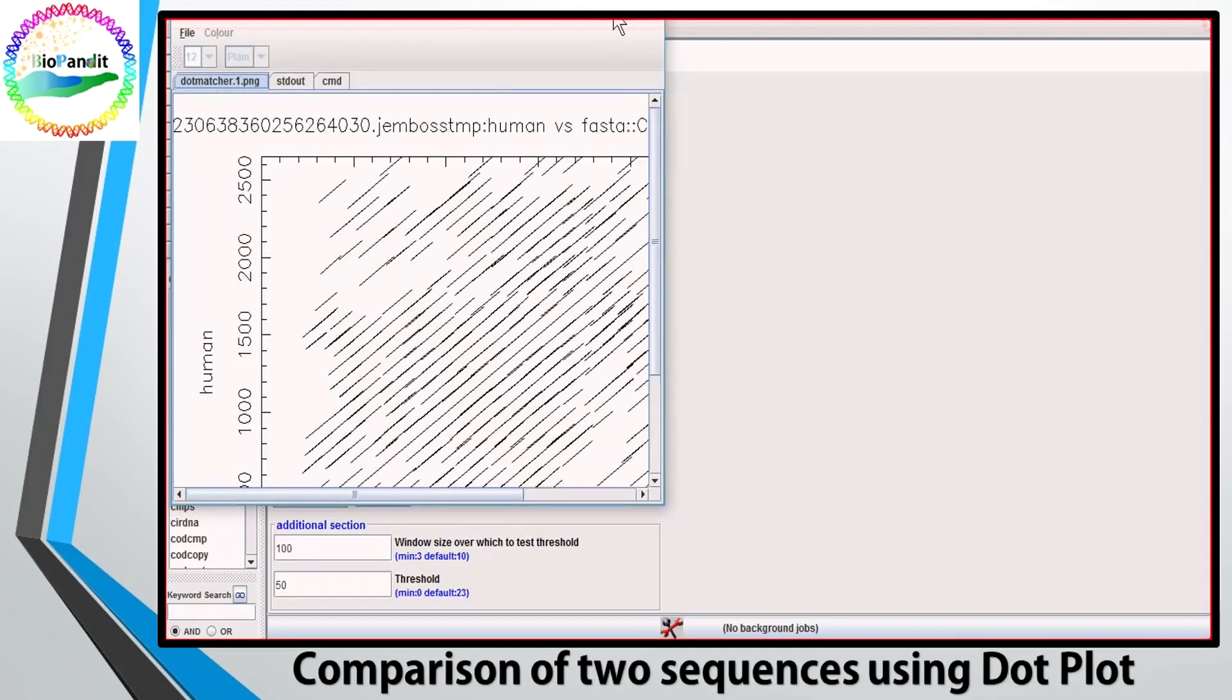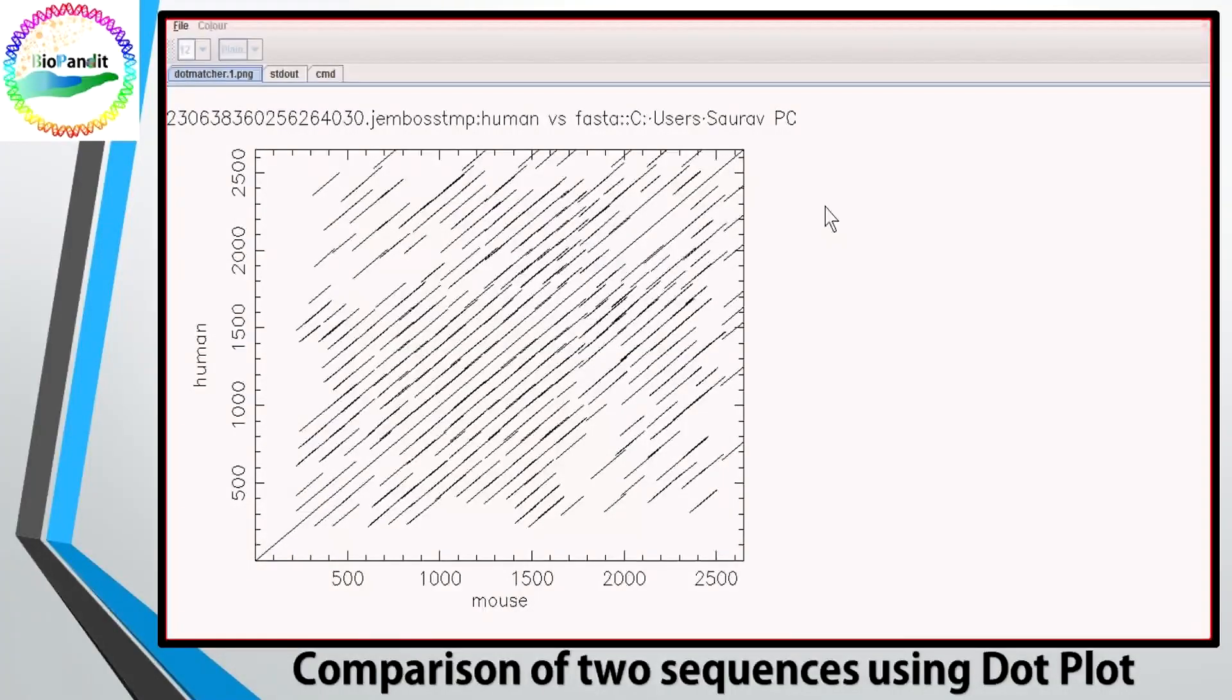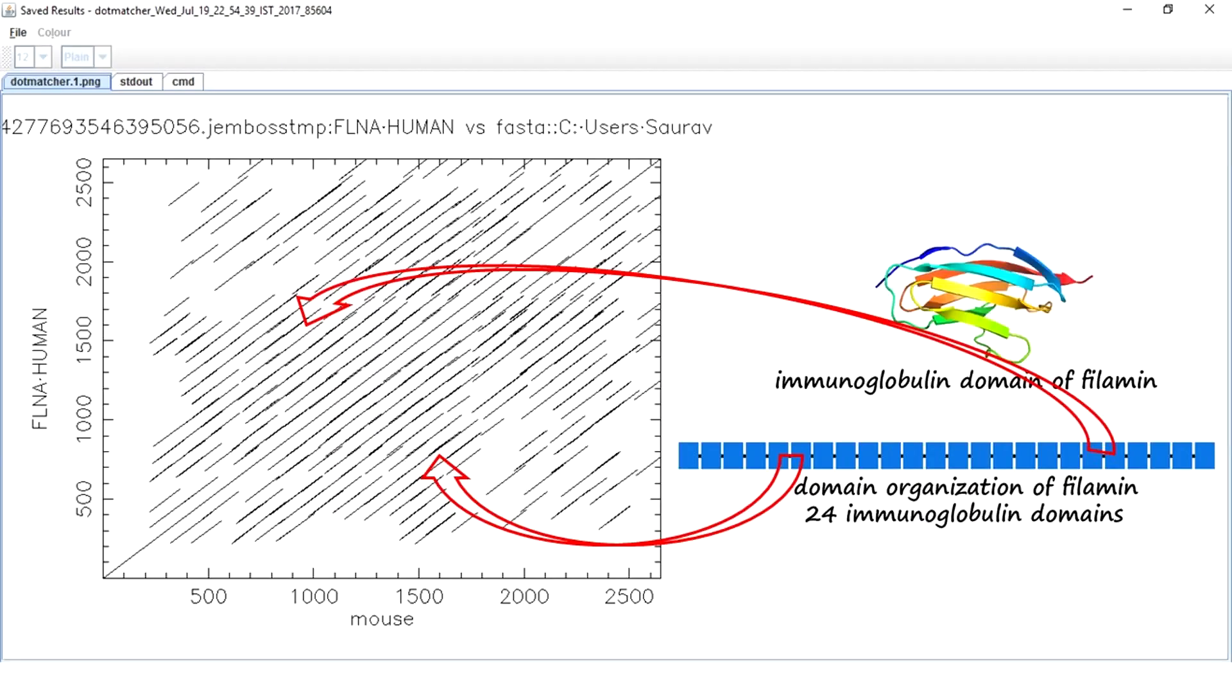A new window appears containing your plot. See, there is a continuous diagonal and several repeats. Why so many repeats? Because philamine contains 24 immunoglobulin domains of approximately 100 amino acid lengths. When we compare human and mouse philamine sequences, these domain repeats are reflected in the off-diagonal regions of the dot plot.